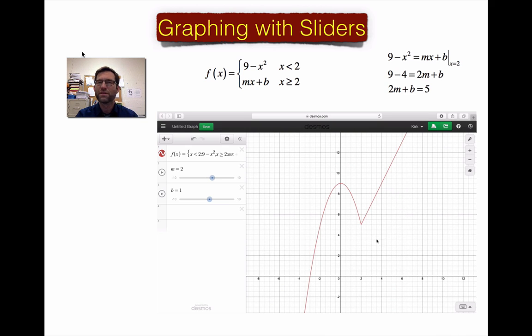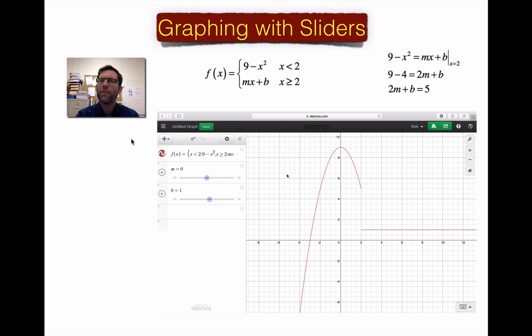I could do all sorts of m's and b's. For instance, let me do an easy one. Let me make m equal to 0. Gives me a nice horizontal line. Notice I don't have continuity anymore. But if m is 0, then b would have to be 5. So if I just adjust that, then b is equal to 5, and I have this nice parabola transitioning to a horizontal line.